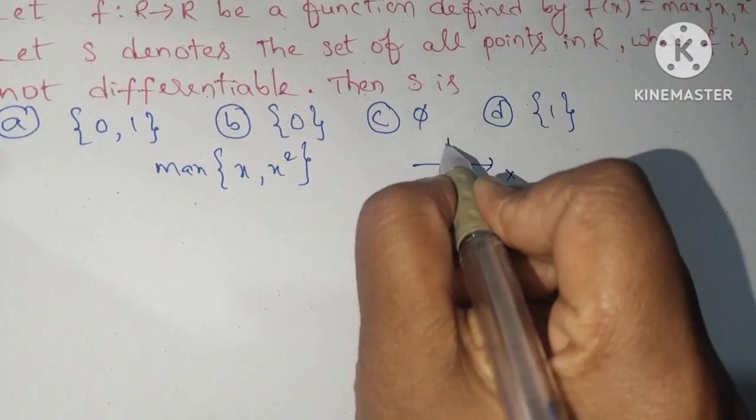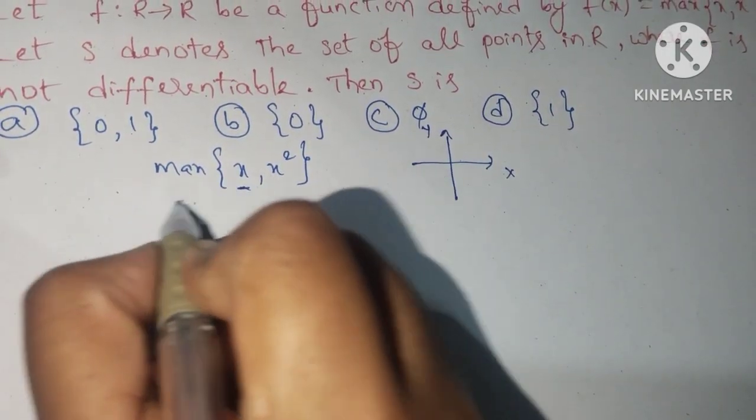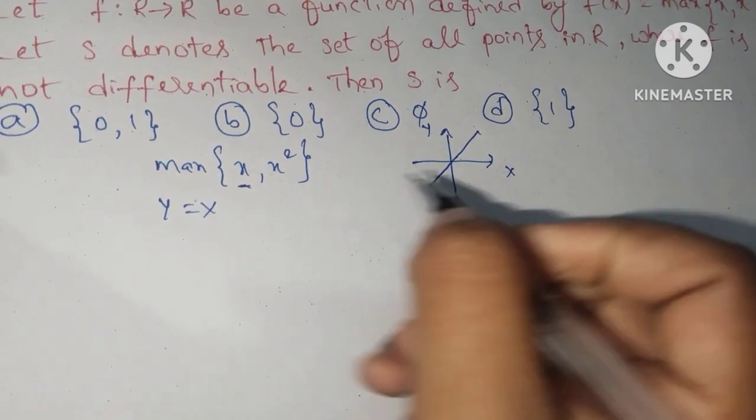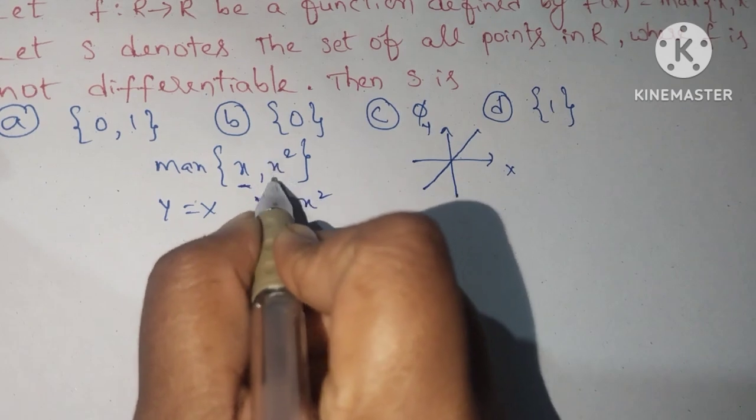So I am taking x axis and y axis here. The first is y equals x, so y equals x, the graph like this, linear graph. And then next one is y equals x², this is x².